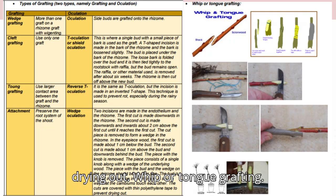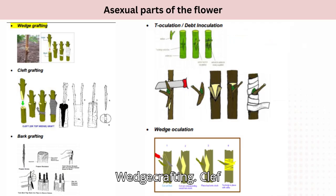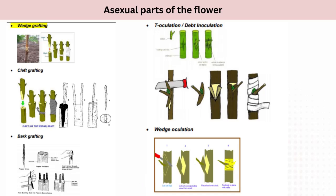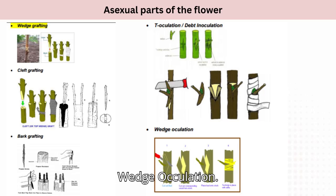Summary of grafting types: whip or tongue grafting, wedge grafting, cleft grafting, bark grafting, deoculation (dead inoculation), and wedge oculation.